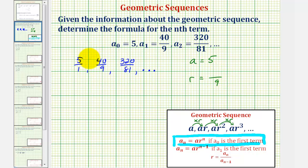Now looking at the numerator, notice how we have five, 40, and 320. And since five times eight equals 40, and 40 times eight equals 320.